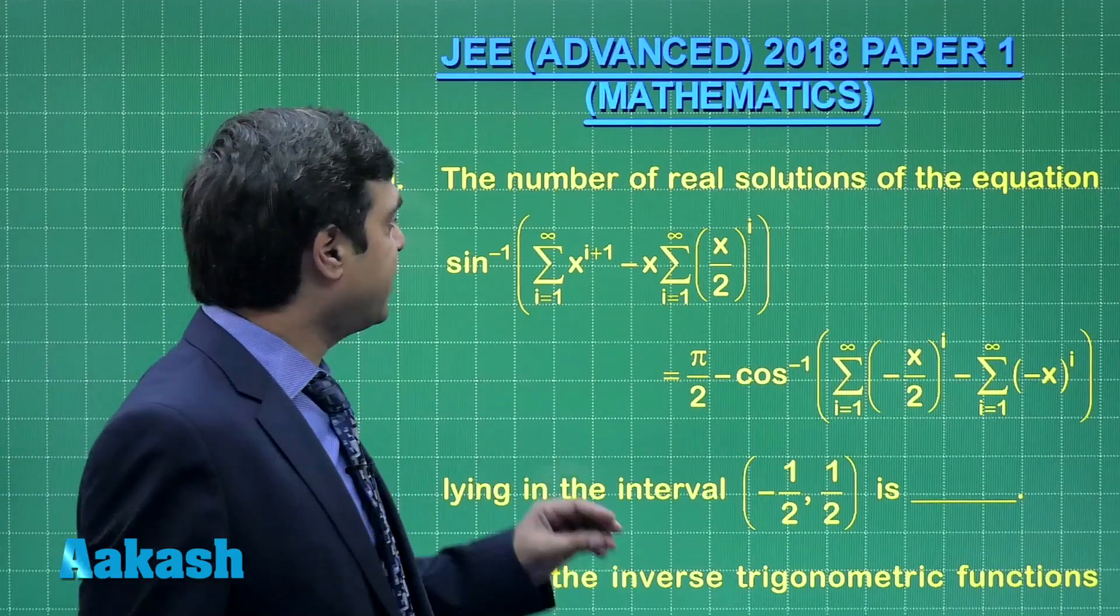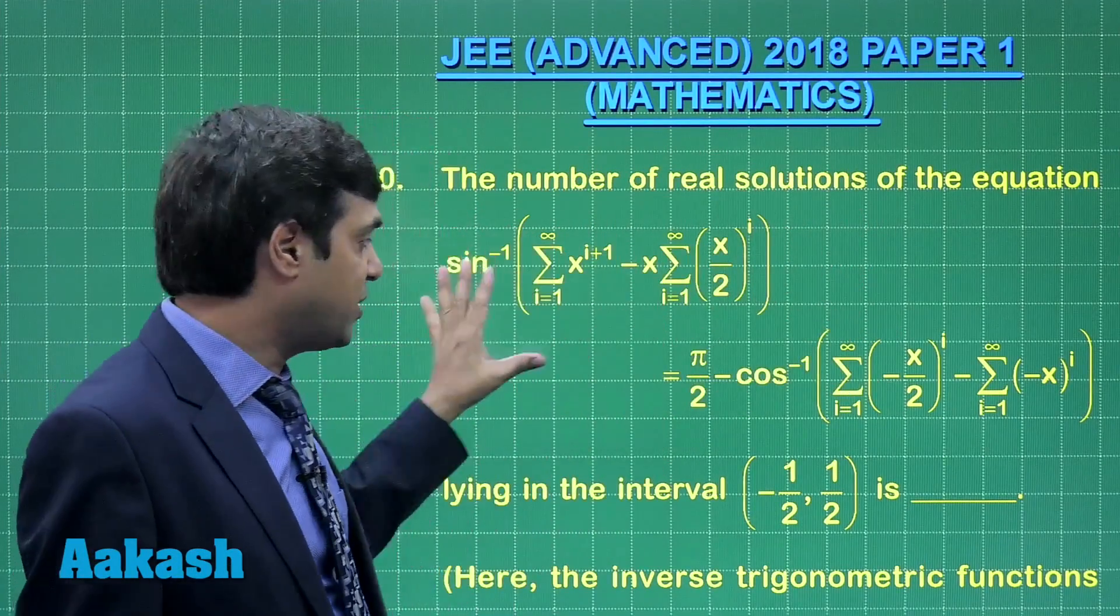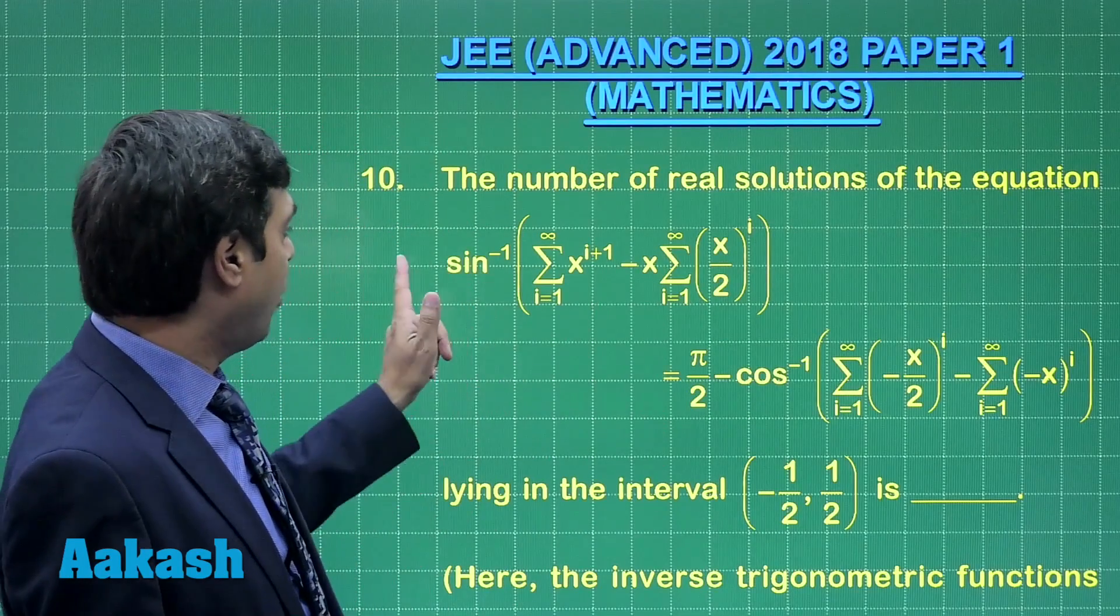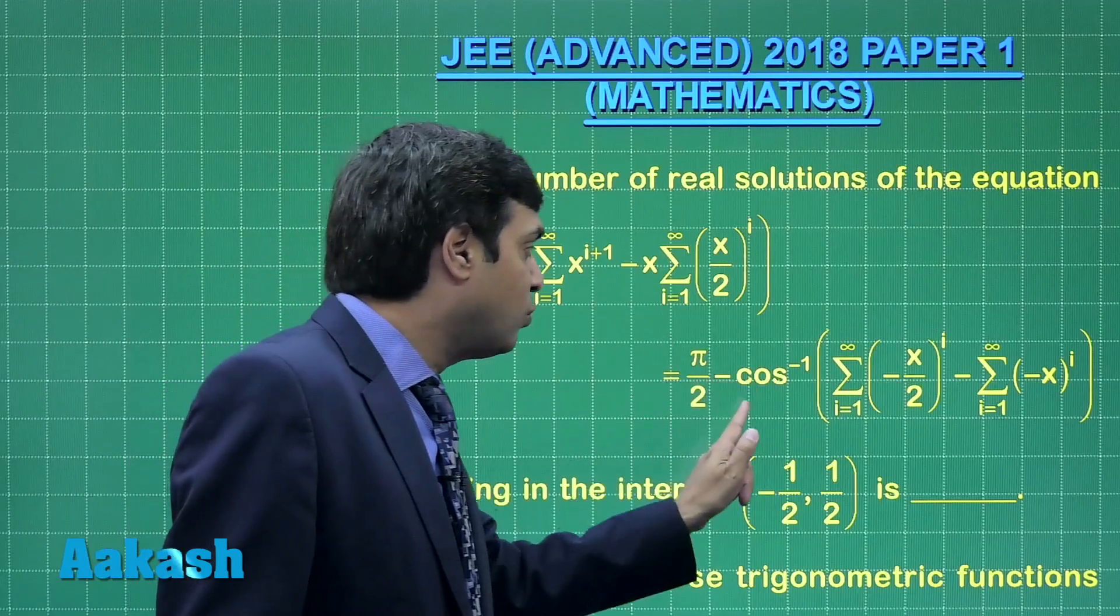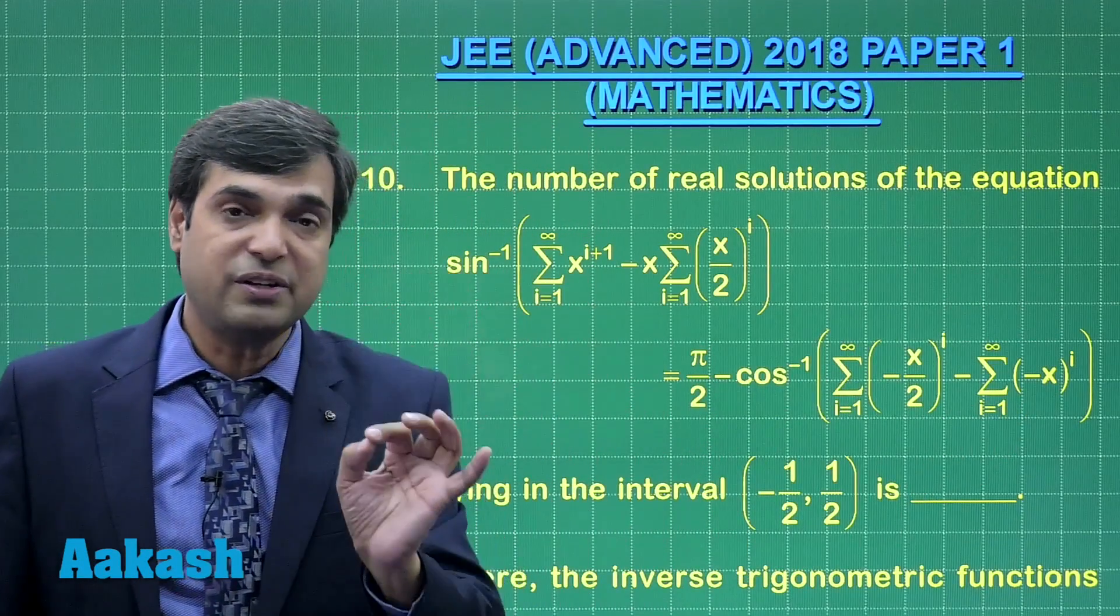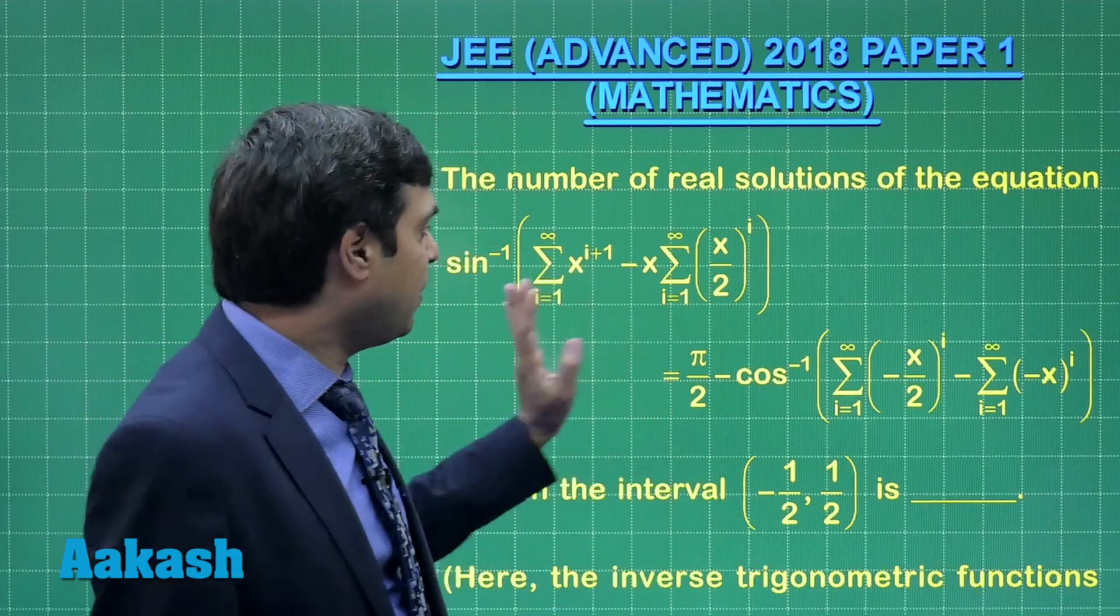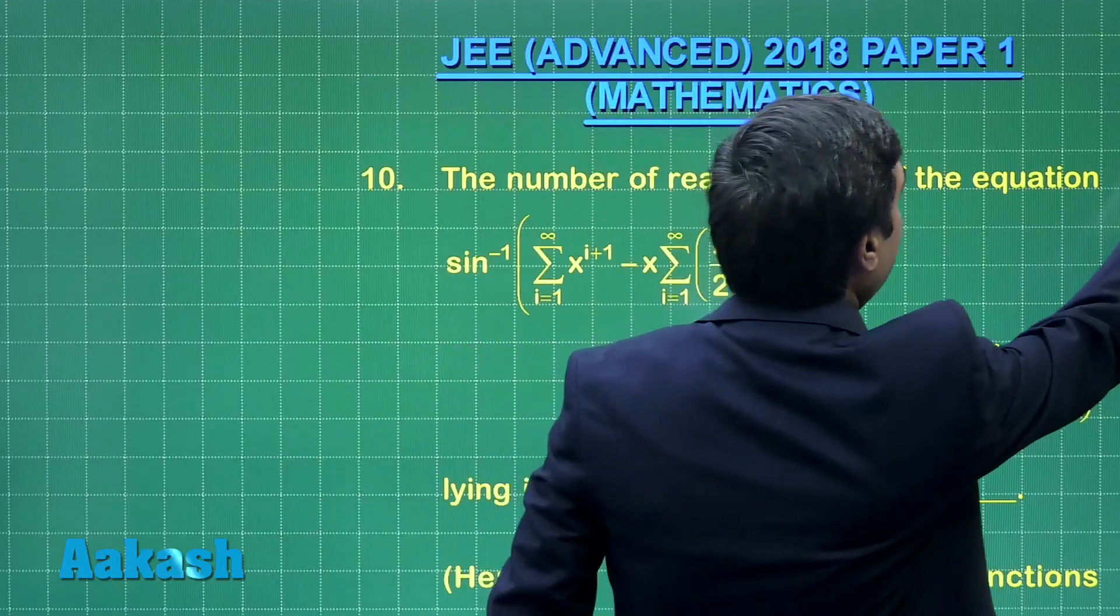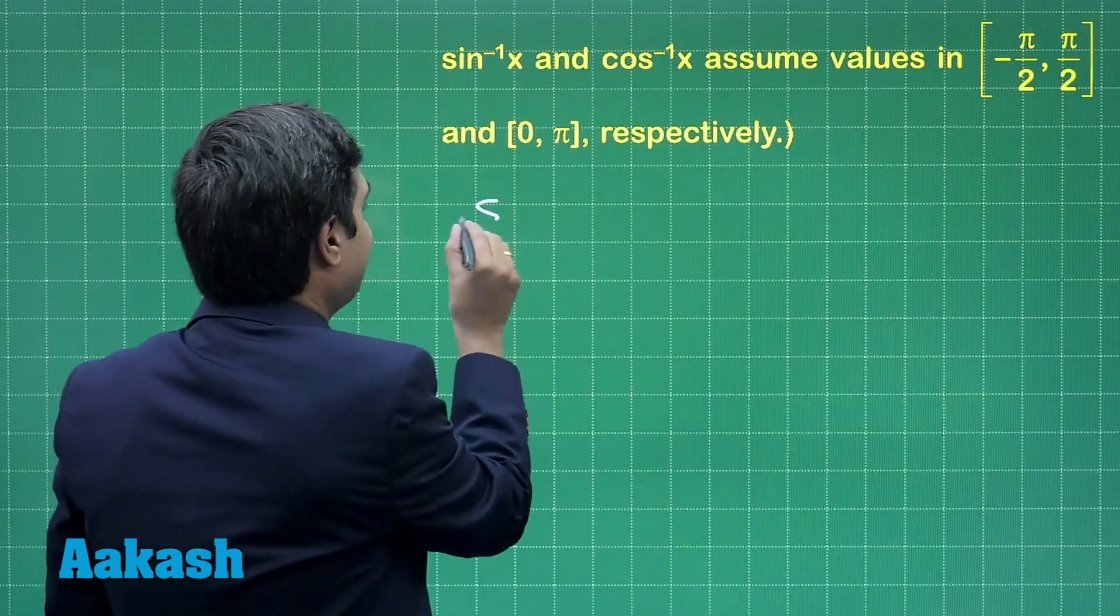Taking up question number 10, the number of real solutions of the equation - one trigonometric equation is given which is of the form sin inverse A equals pi by 2 minus cos inverse B. Sin inverse A plus cos inverse B equals pi by 2 meaning A equals B. So, simple question based on the concept that A equals B.